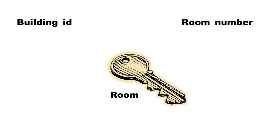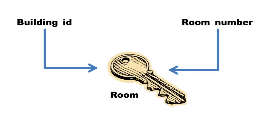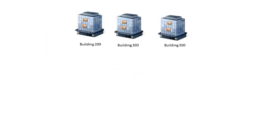Building is identified by a building ID, and every room has a room number associated with it. This particular room refers to building 200, room 501, whereas this room here refers to building 300, room 501. The room number is the same — 501 — but it's in a different building. So if I just say I want to go to room 501, nobody will be able to take you unless you also tell them the building number. Therefore, the primary key for room is jointly identified by building ID and room number.